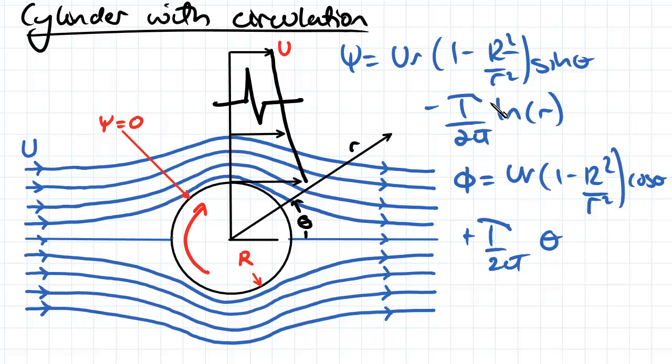So almost identical to the equations that we had for our flow over a circular cylinder. The only difference being this second term.